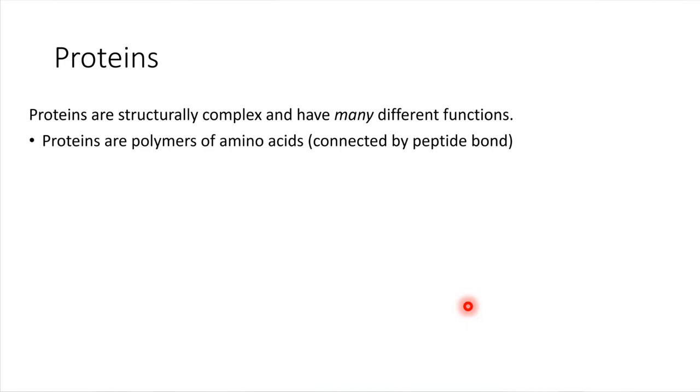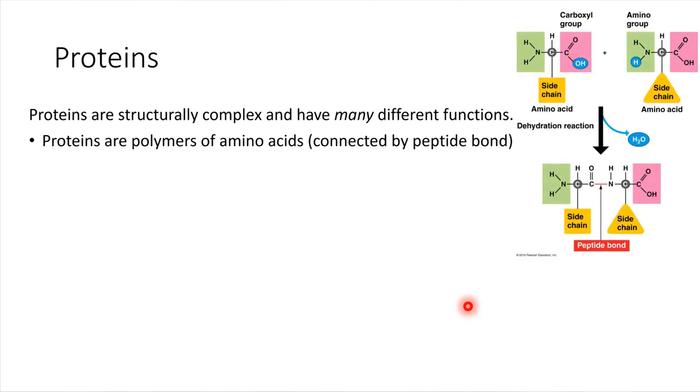So what we're going to do is start from the basics. Proteins are built from amino acids. They are polymers of amino acids. So what is an amino acid? Let me show you a schematic of an amino acid. Take a look right up here at the top. This is a generic amino acid.